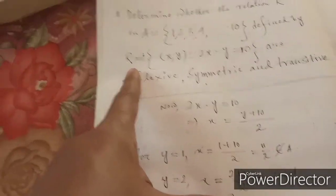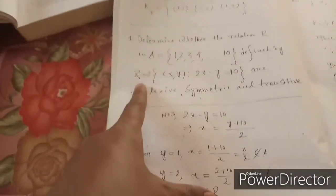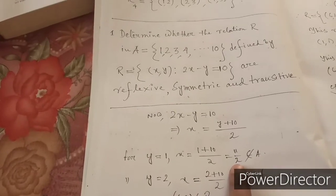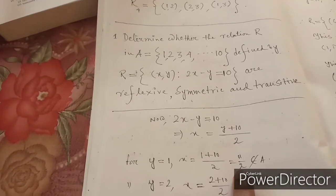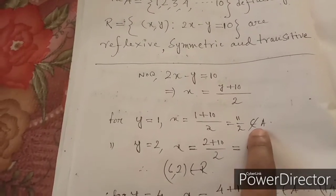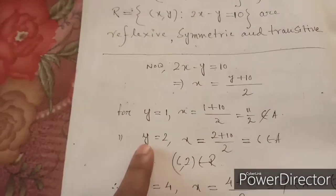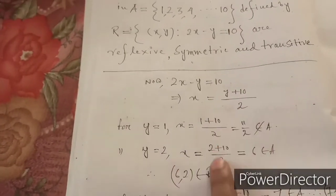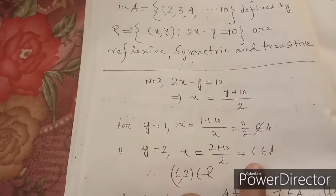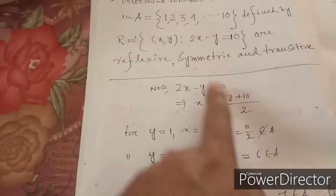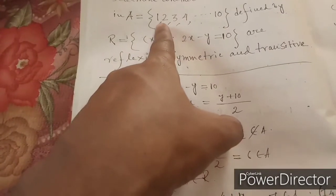Since R is a relation on A, it must be a subset of A × A, so x must be a natural number. Now consider y = 2: x = (2 + 10) / 2 = 6. Since 6 is a natural number and belongs to A = {1, ..., 10}, this pair is valid.